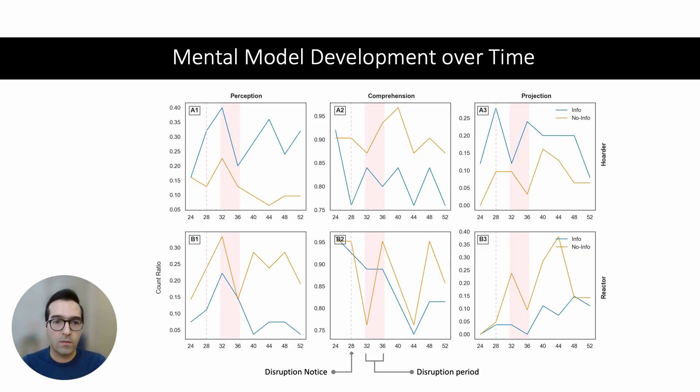Also, if you look at mental model development over time, not only these differences are clear, but we can also observe trends that are affected by information sharing and the disruption period. For example, reactors showed a decline in comprehension with information and also an increase in projection levels when they didn't have access to information. These results provide insight on cognitive aspects of behavior as reflected in players' articulation of their thought process.